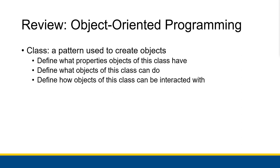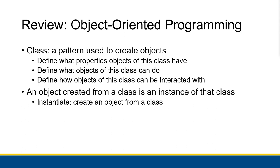A class is a pattern that's used to create objects, so objects are created from a particular class. The class defines what that object is able to do, what properties that object has, and how objects of this class can be interacted with. When we actually create an object from a particular class in object-oriented programming, we say that that object is an instance of that class. The act of actually creating an object from that class is known as instantiation.